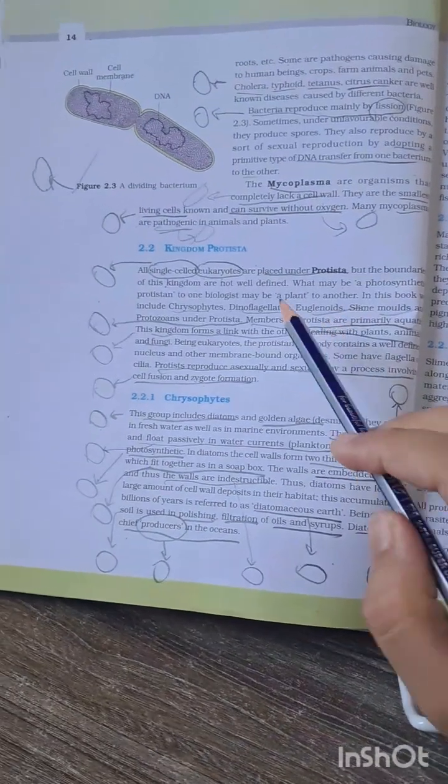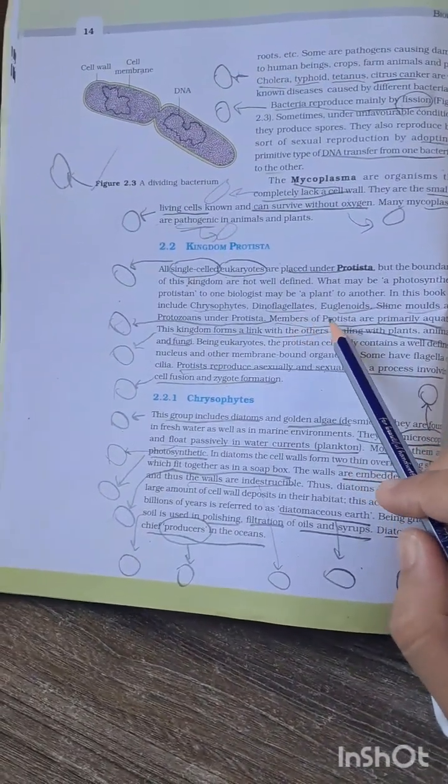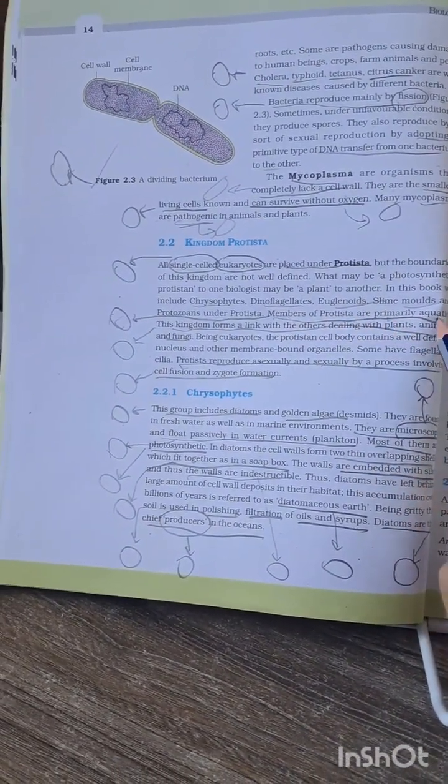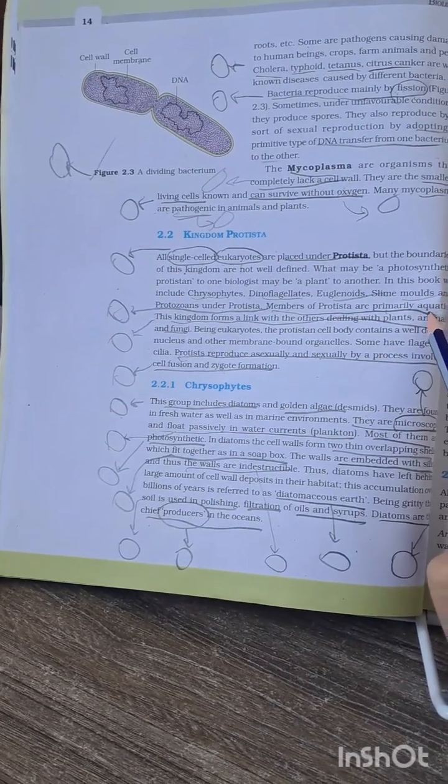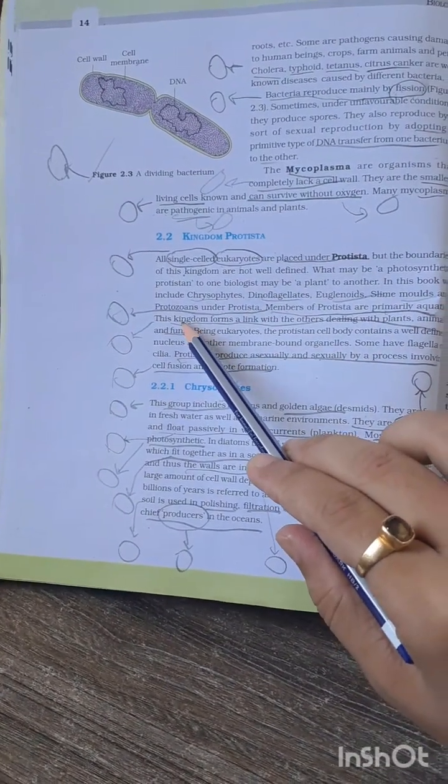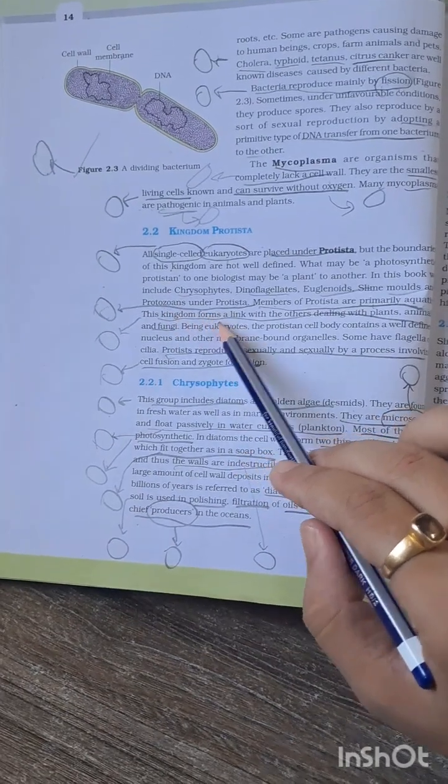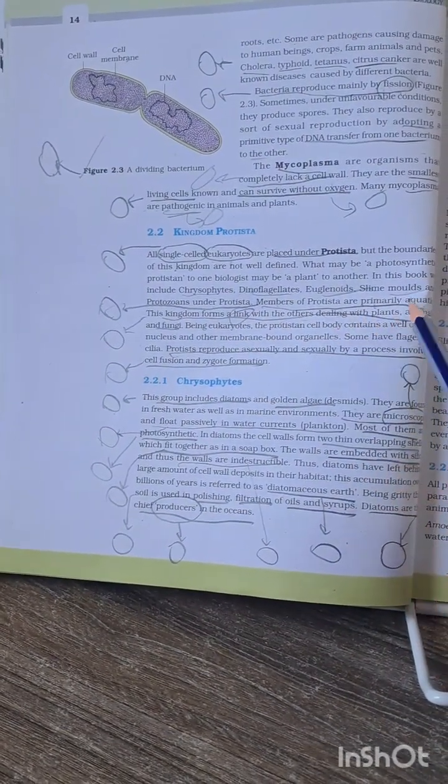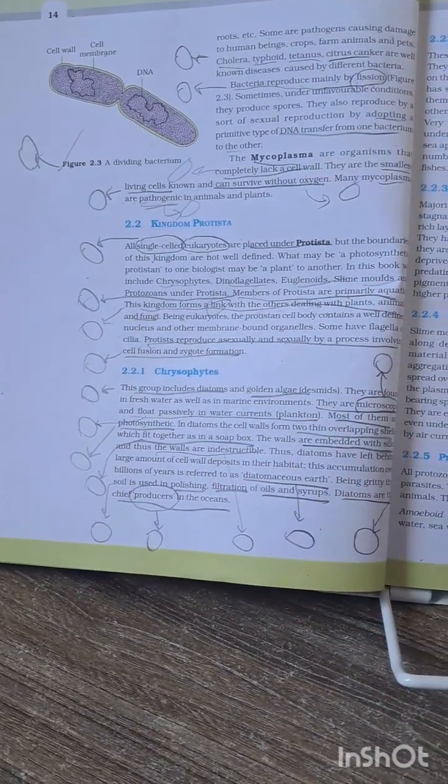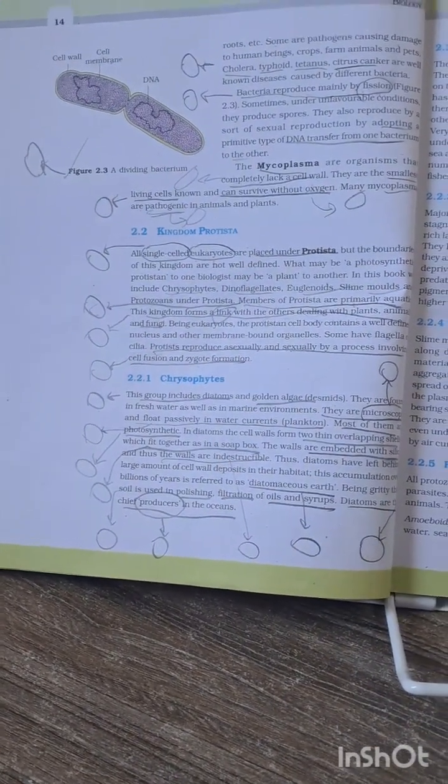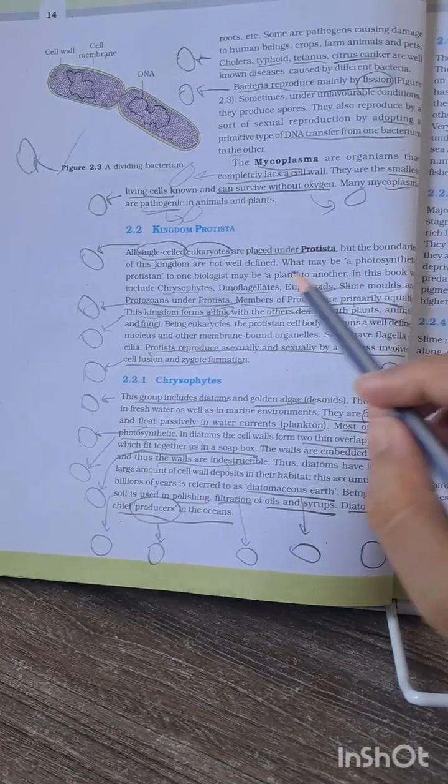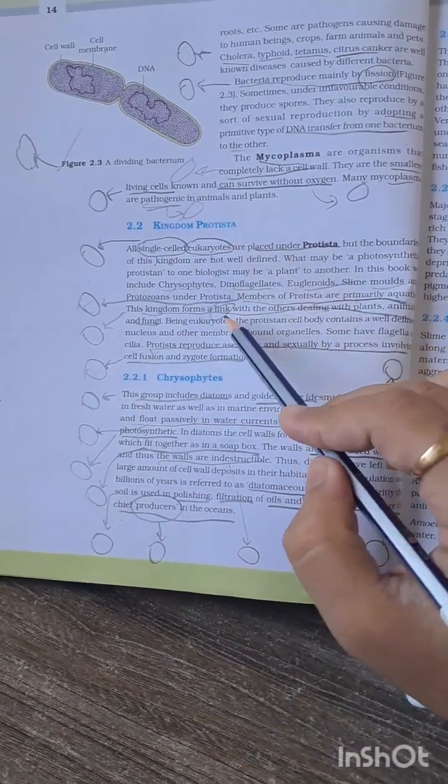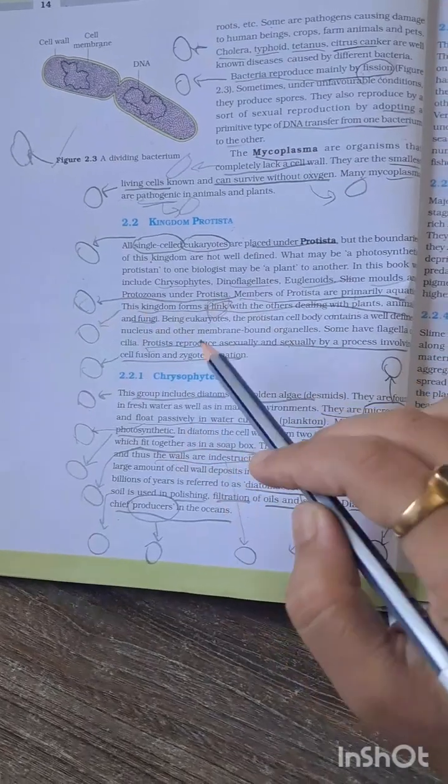The characteristics of Protista - primarily aquatic - this question has been asked many times and is very important. The kingdom forms a link with others - plants, animals, and fungi. They will ask which kingdom forms a link. You have to be very clear that in NCERT it is given that Kingdom Protista forms a link with plants, animals, and fungi.